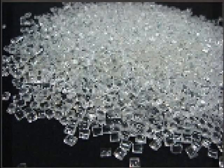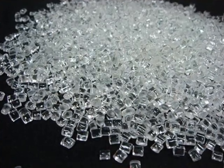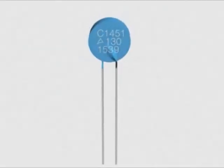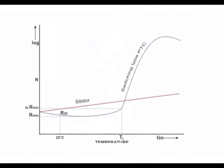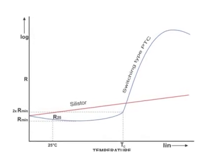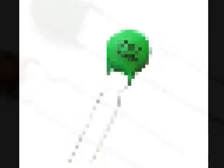PTC thermistor or thermal resistance is made of polycrystalline ceramic material with high positive thermal coefficient. In temperature measurement with PTC or positive temperature coefficient thermistor, electrical resistance increases with increasing temperature and decreases with decreasing temperature. That is, the temperature is obtained by measuring the resistance of the thermistor.